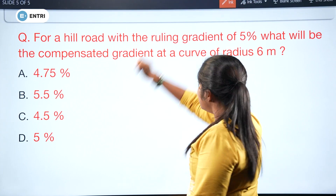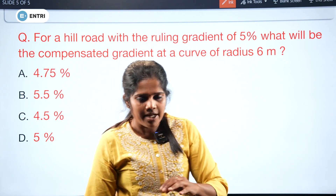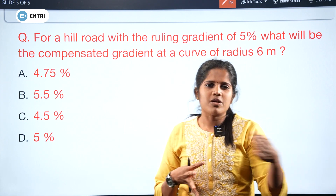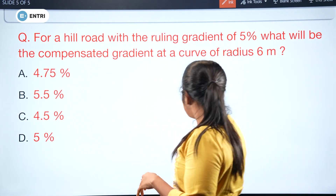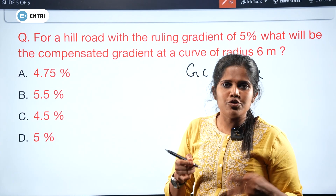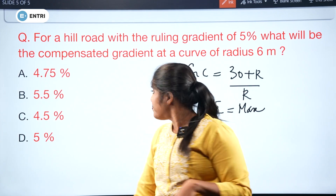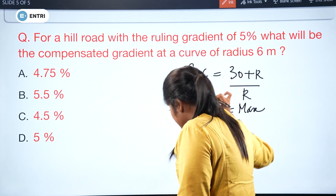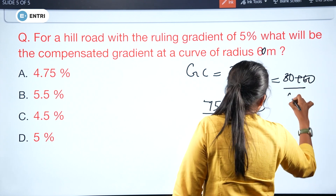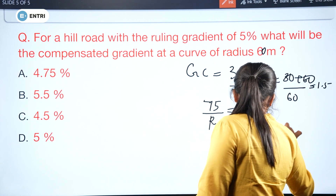The last question: for a hill road with a rolling gradient of 5%, what is the compensated gradient at a radius of 60 meters? Grade compensation formula is (30 + R) / R, subject to a maximum of 75/R. Calculating: (30 + 60) / 60 = 1.5, and maximum 75/60 = 1.25. So grade compensation is 1.25%.